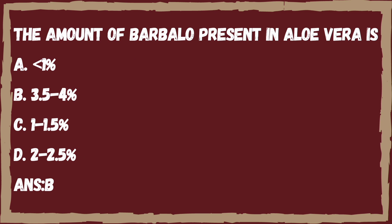Next question: the amount of barbaloin present in aloe vera is — Option A, less than 1%. Option B, 3.5 to 4%. Option C, 1 to 1.5%. Option D, 2 to 2.5%. The right answer is Option B, that is 3.5 to 4%.